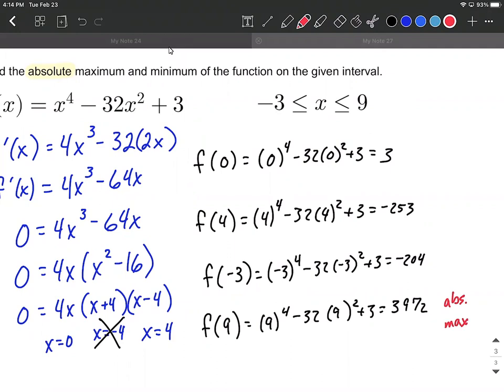Finding the very smallest number, it's going to be the most negative. So we say the absolute minimum is going to be negative 253.